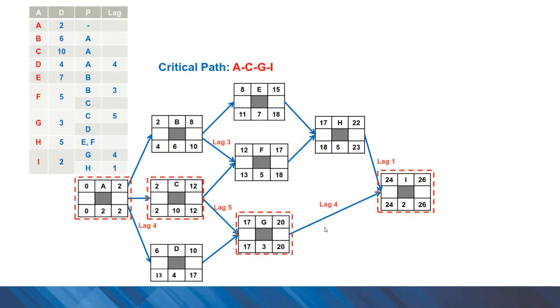Here is an example of a network with lags. As you can see, activity A is completed at the end of the second day, and then there is a lag of 4, so we can start activity B at the next day. The completion time for the project is 26 days, and I encourage you to check the calculations in the forward pass and backward pass in this project.